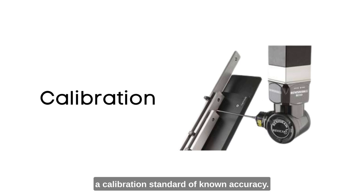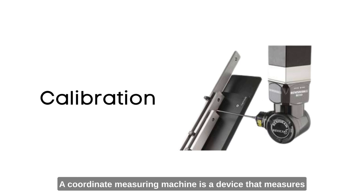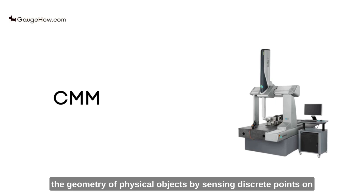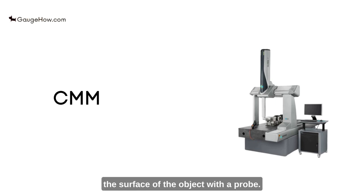CMM: A coordinate measuring machine is a device that measures the geometry of physical objects by sensing discrete points on the surface of the object with a probe.